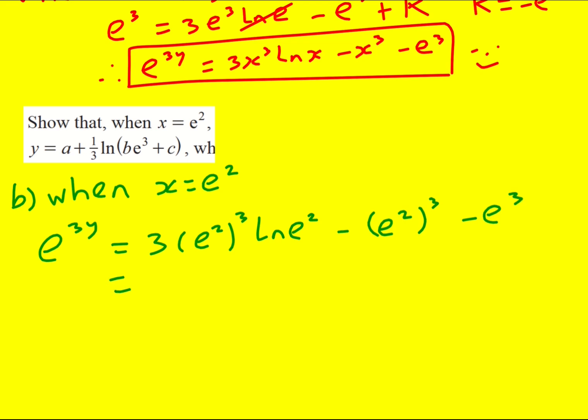Let's try to tidy this up. ln e squared is actually just going to be 2, or equivalently you can imagine bringing the 2 down and it's 2 ln e. So I'm going to get 2 times 3, which is 6, times e to the 6. And e squared to the power of 3 is e to the 6 as well.